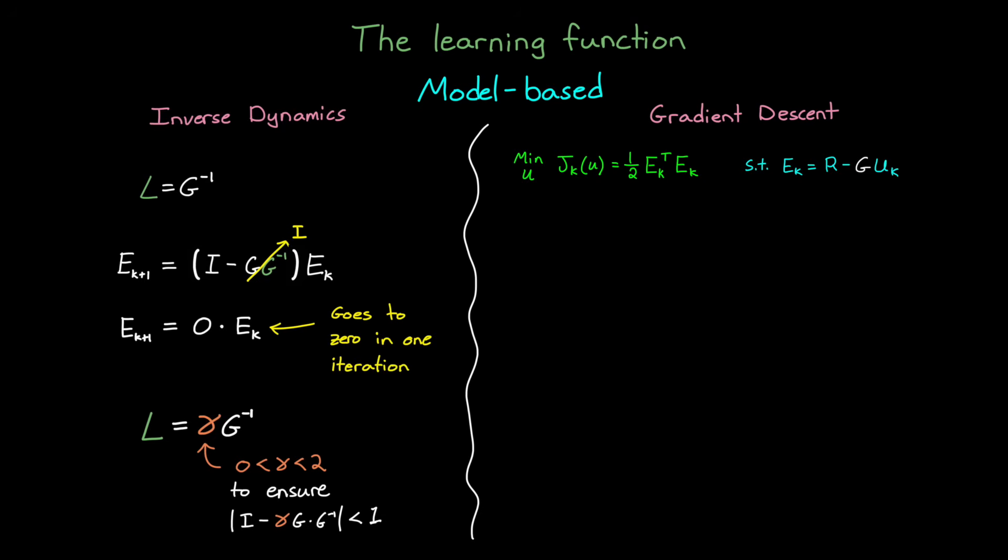So if we want to lower error, then between iterations, we need to change the input u in the direction that lowers j. And the way we do this is by taking a partial derivative of j with respect to u to get the gradient. And then we adjust u in the negative direction, or in the direction that descends the gradient.